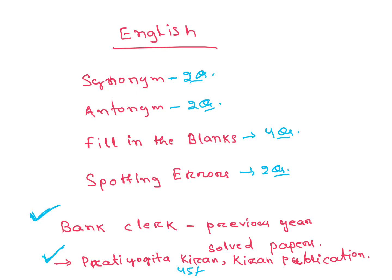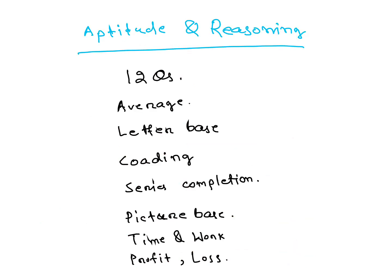From Aptitude and Reasoning, 12 questions will be asked. Topics include: letter-based reasoning, number-based reasoning, coding-decoding, series completion, and picture-based reasoning. From Aptitude: time and work, profit and loss, and average — these chapters are important.